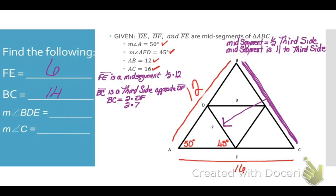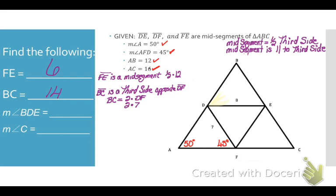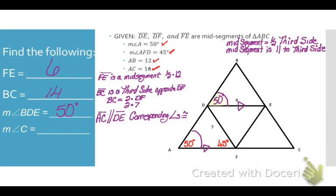Now we're going to look at angles. I know that a mid-segment is parallel to the third side, so line segment DE is parallel to line segment AC. When parallel lines are cut by transversals, corresponding angles are congruent. Angle A and angle BDE are corresponding angles, so since angle A is 50 degrees, angle BDE is also 50 degrees.